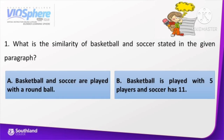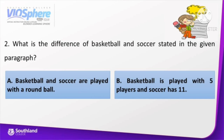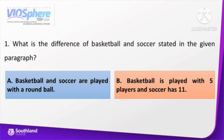Sample number 1 question: What is the similarity of basketball and soccer stated in the given paragraph? A. Basketball and soccer are played with a round ball, or B. Basketball is played with 5 players and soccer has 11. Very good! The correct answer is letter A — basketball and soccer are played with a round ball. What is the difference of basketball and soccer stated in the given paragraph? A. Basketball and soccer are played with a round ball, or B. Basketball is played with 5 players and soccer has 11. Very good! The correct answer is letter B — basketball is played with 5 players and soccer has 11.